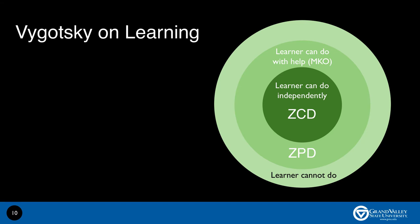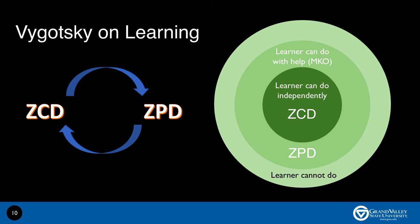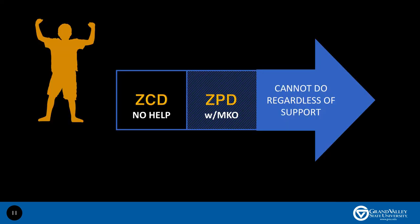In other words, learning is an iterative process. As a person continues to learn, the zone of current development and the zone of proximal development continue to change over time. And independent practice is needed to close the loop. Here is another way to visualize the learning process. According to Vygotsky, we are always moving from the zone of current development to the zone of proximal development.